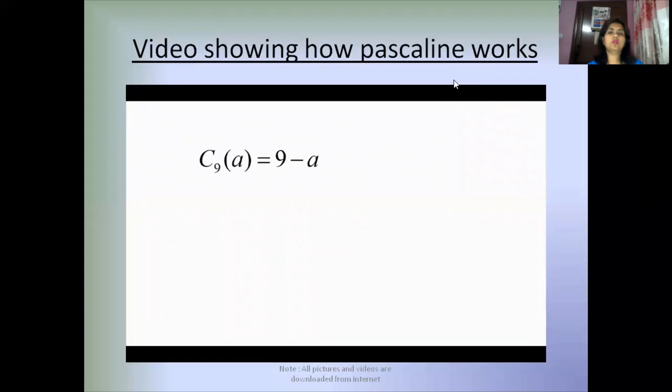The nines complement of any one digit number is 9 minus that number. For example, the nines complement of 6 is 9 minus 6 equals 3.